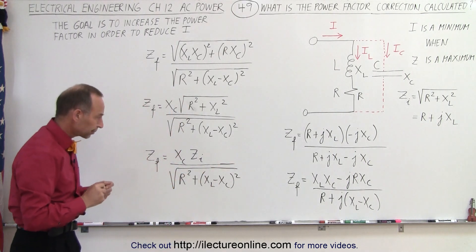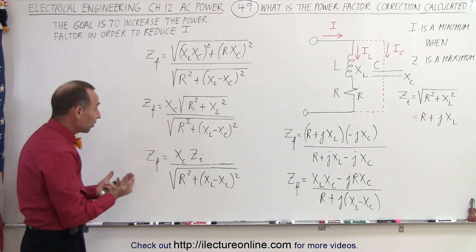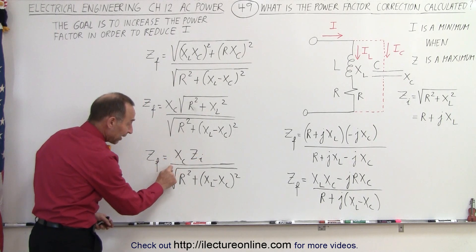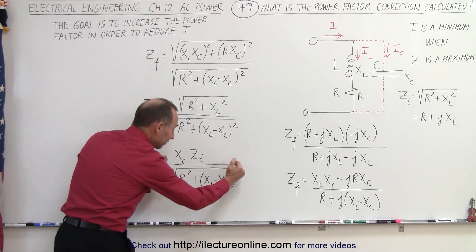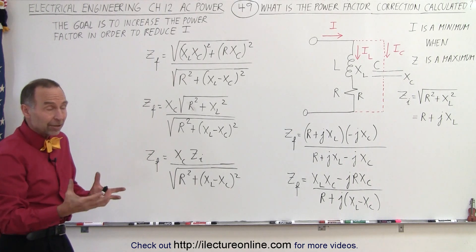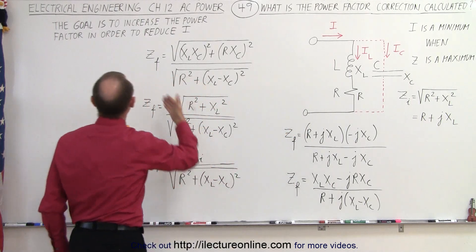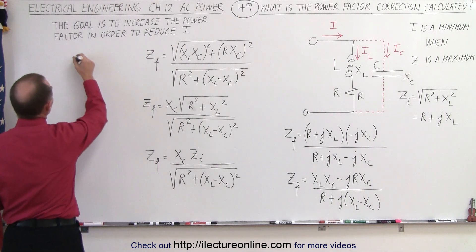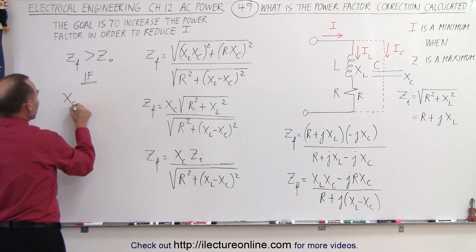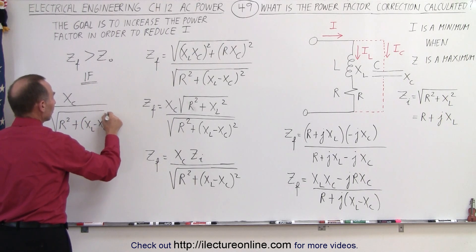Notice this quantity will be a number either greater than one, equal to one, or smaller than one. If it's smaller than one, Z_final will be smaller than Z_initial. If equal to one, Z_final equals Z_initial. But if X_C divided by the square root of R squared plus (X_L minus X_C) squared is greater than one, then Z_final will be greater than Z_initial — and that's the goal.